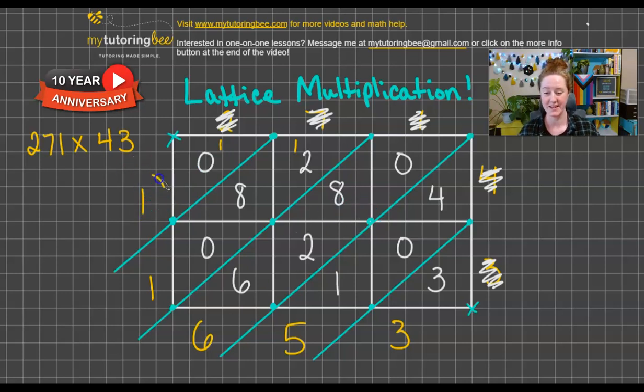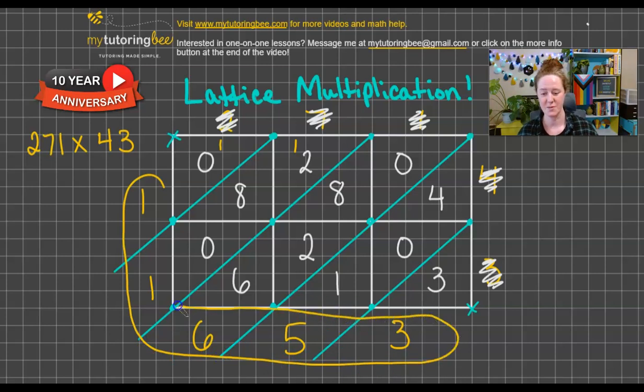So we're done. This is it. This is our product. 271 times 43 equals 11,653.